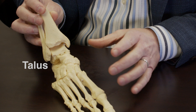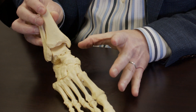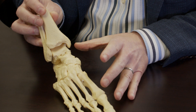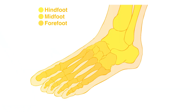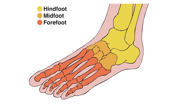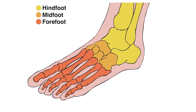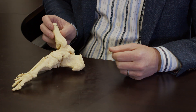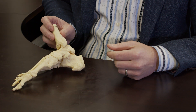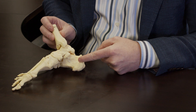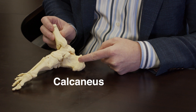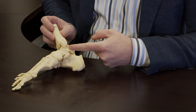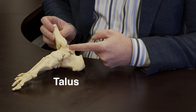The structures under the ankle we call the foot. The foot is made up of the hind foot, the mid foot, and the forefoot. The hind foot is made up of the heel bone, or the calcaneus, and the ankle bone, the talus.